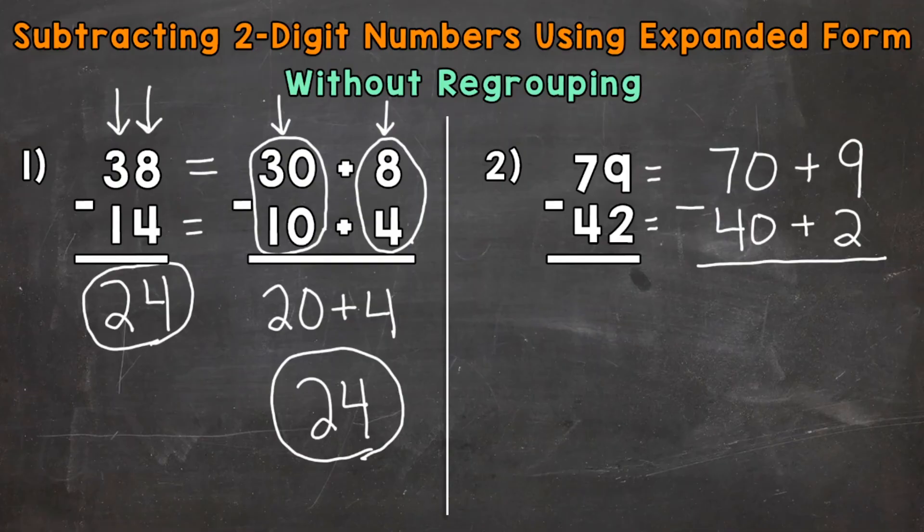And now we're ready to subtract. So start with the ones. We have 9 minus 2. That's going to give us a 7 in the ones place for our answer. Bring the addition sign down for the Expanded Form, and then we move to the tens. So 70 minus 40 gives us an answer of 30. So our answer in Expanded Form, 30 plus 7. In Standard Form, that's going to give us 37.